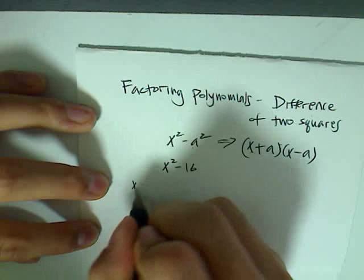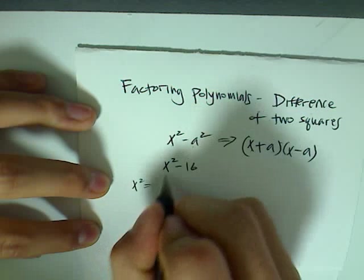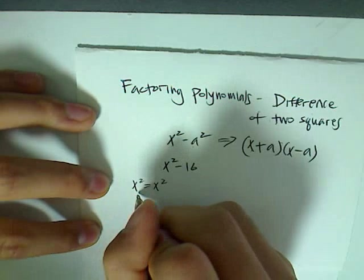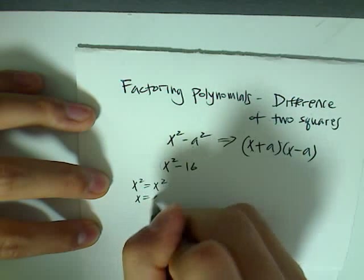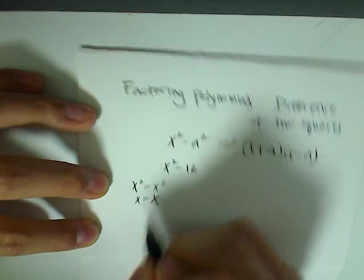So to find x, we have x squared equals to what this is. So x squared equals x squared, so we know that x equals x. Because when you take the square root of both sides, you have x.